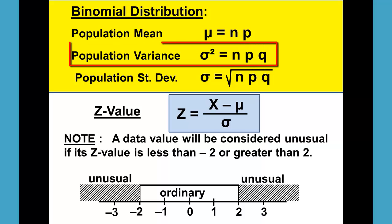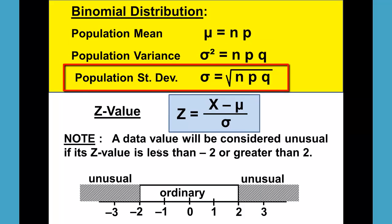The population variance, sigma squared, is equal to n times p times q. And the population standard deviation, sigma, is equal to the square root of n times p times q.